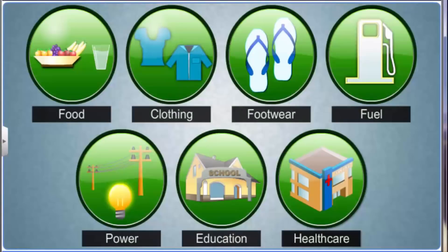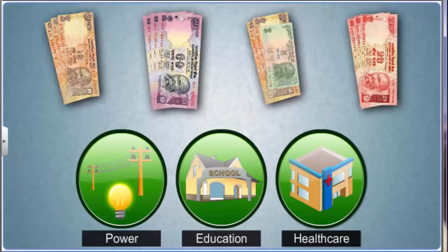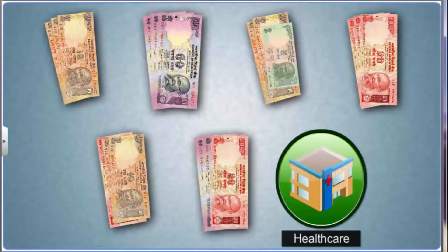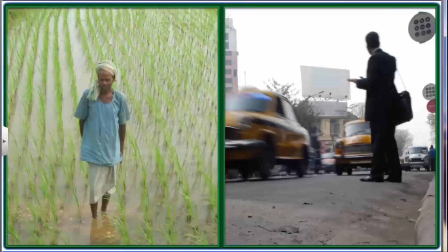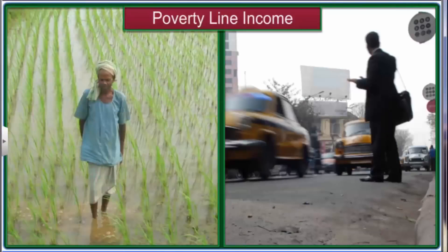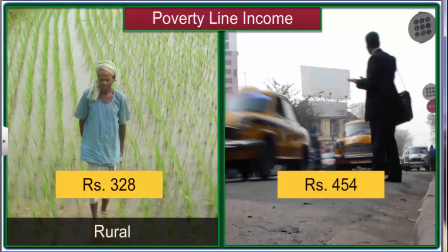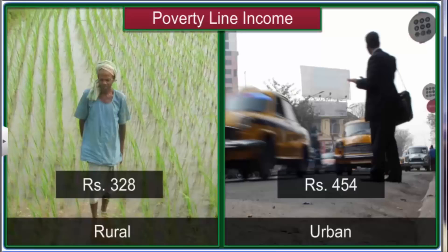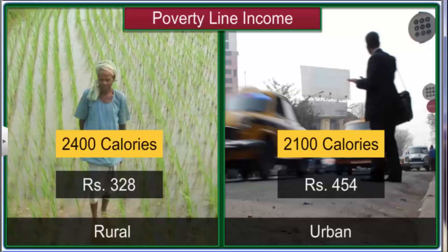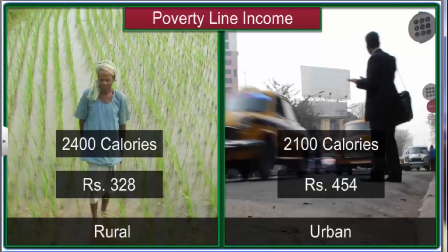The cost of each item in the minimum requirements of food, clothing, footwear, fuel, power, education and health care is added up to find the minimum income required for a person to survive. In the year 2000, the monthly poverty line income was fixed at 328 rupees per person in rural areas and 454 rupees per person in urban areas. Though the calorie requirement for people in rural areas is more, their poverty line income is less than for people in urban areas, because things are usually less expensive in villages than in big towns and cities.